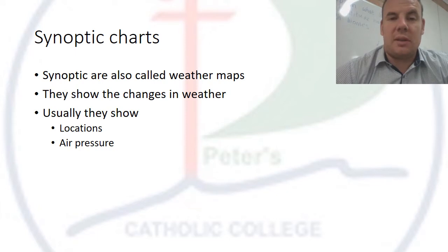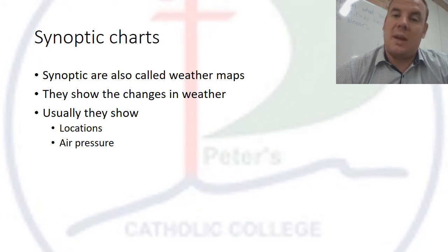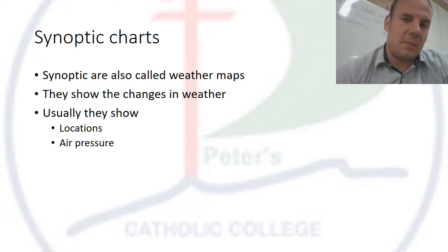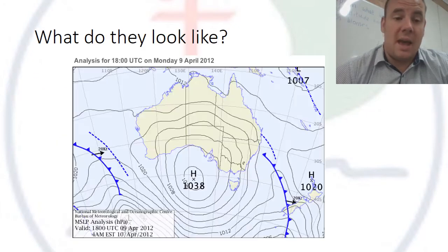Air pressure is the force of air pushing down on the earth. There are two types: high and low. With high pressure, we normally get very settled weather conditions — low moisture in the air, clear skies, and few clouds. Whereas low pressure brings about unsettled weather, and there is moisture in the air.